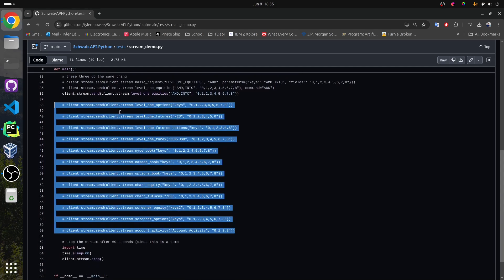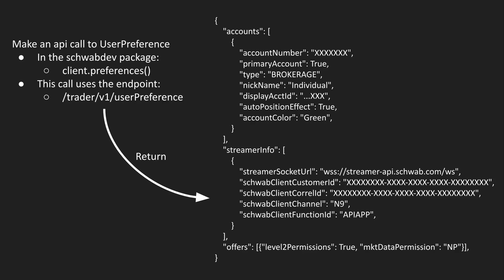For this part of the video, I'm going to go over streaming from scratch. You can also find all of this documentation using the streamer guide from the Docs folder on the GitHub. To start, we have to make a call to user preference. In the Schwab dev package, this can be called by client.preferences, and then to get the data out of it, you call .json. This call will return something that looks like this. The only part that we really need is the streamer info, which has the URL, the customer ID, the Corel ID, and a couple other things we'll need when we go to start the stream.